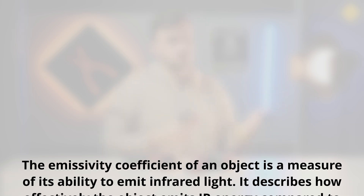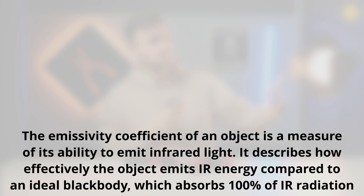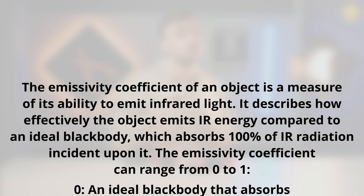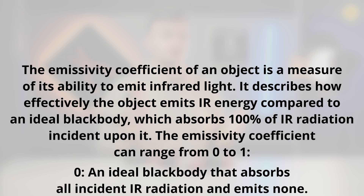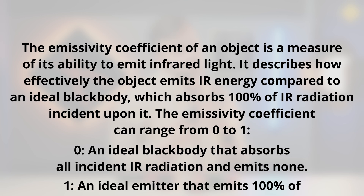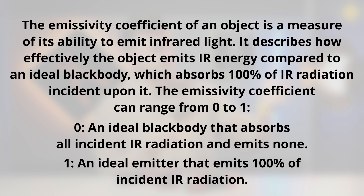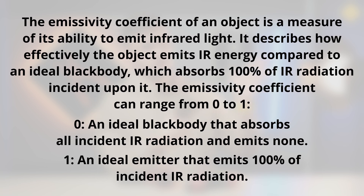So what is this emission coefficient? The emissivity coefficient of an object is a measure of its ability to emit infrared light. It describes how effectively the object emits IR energy compared to an ideal black body, which absorbs 100% of IR radiation incident upon it. The emissivity coefficient can range from 0 to 1. 0 is an ideal black body that absorbs all incident infrared radiation and emits none. 1 is an ideal emitter that emits 100% of incident infrared radiation. So, as you can see, it's not enough to just point a pyrometer at an object. You also need to know the emissivity coefficients of the object.